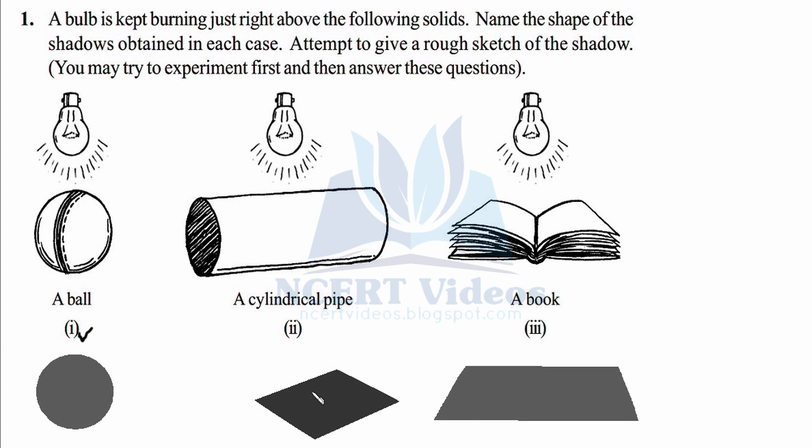Shadows change their position whenever light source angle is changed, but in this question it is constant, that is it is above the object. Again in this case the object is a book and it will form a rectangular shape like this. The shape here is a little bit tilted because we are tilting our cylinder as well. However, these both are rectangles.